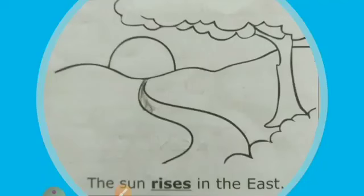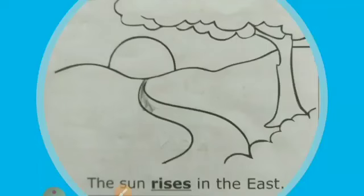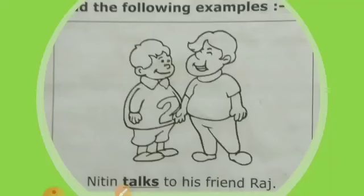The other picture is: the sun rises in the east. Nitin talks to his friend Raj, and the sun rises in the east — these are the two examples given. While reading these examples, have you given attention to the words written in bold and underlined?